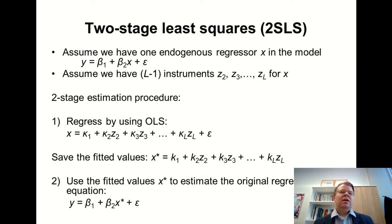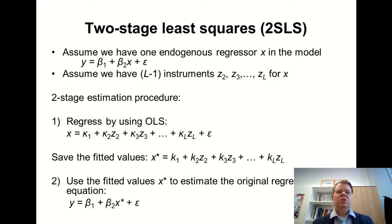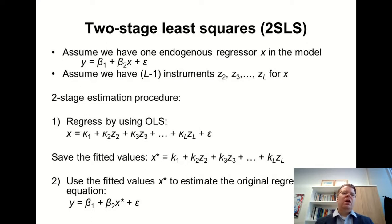Although it's intuitive to think about this in the case of measurement error — if there's some measurement error in x that correlates with epsilon, we could use alternative measurements to get a predicted x-star that is free from those measurement errors, giving us a cleaner measure of x. But the same rationale can be used when we have a simultaneity problem or omitted variable bias. Any type of endogeneity can be addressed with two-stage least squares. The instruments do not really enter the original regression model; they are used for predicting and cleaning up the problematic endogenous explanatory variable.